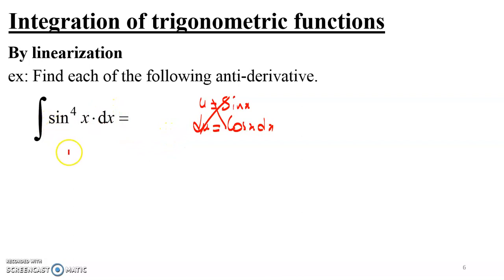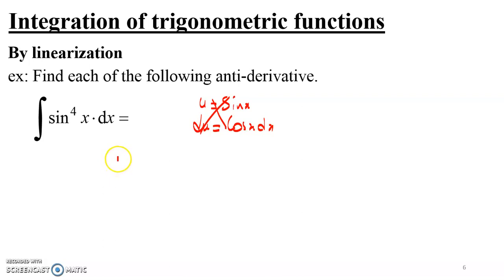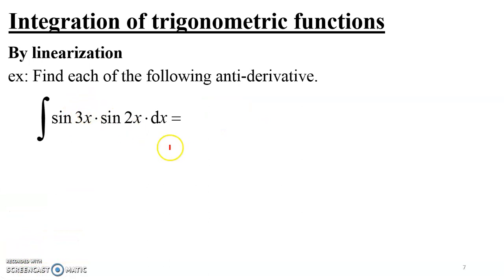Sine to the fourth is a product of four sines. The process of linearization converts that product into a sum of simpler trigonometric expressions, which we can then integrate using the compound formula. Similarly, in the second example we have a product of two sine functions with different angles — again substitution fails — and linearization turns that product into a sum we can integrate.